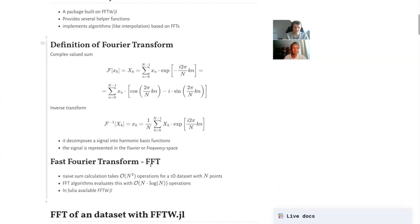The naive sum calculation, if you would evaluate the sum above, takes big O of N squared operations for 1D datasets with N points. And the FFT algorithms, the Fast Fourier Transform algorithms, evaluate that in N log N operations. So it's much quicker, especially in 2D or 3D. There's a huge difference. And in Julia, there's this FFTW package available, which is commonly used.